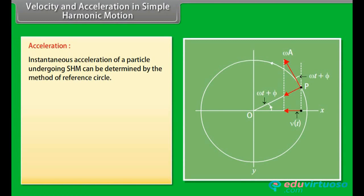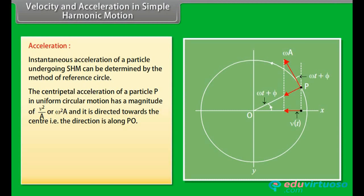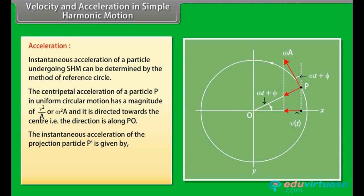The instantaneous acceleration of a particle undergoing simple harmonic motion can be determined by the method of the reference circle. The centripetal acceleration of particle P in uniform circular motion has magnitude V²/A = ω²A, directed towards the center along P-O. The instantaneous acceleration of the projection particle P' is given by: a(t) = −ω²A cos(ωt + φ) = −ω²x(t).